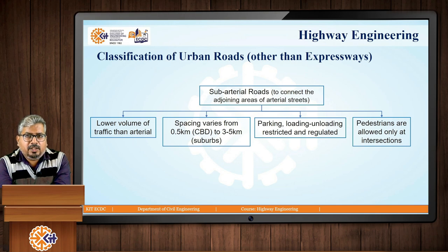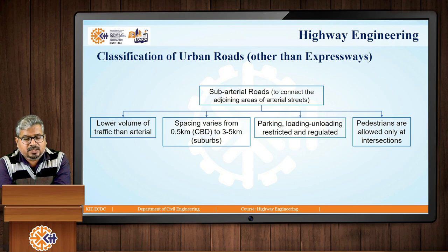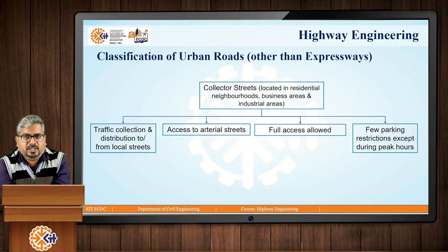Sub-arterial roads connect adjoining areas of arterial streets with lesser traffic volume. Spacing varies from 0.5 km for the central business district to 3–5 km for the suburbs. Parking and loading/unloading are still restricted and regulated, and pedestrians are allowed only at intersections.